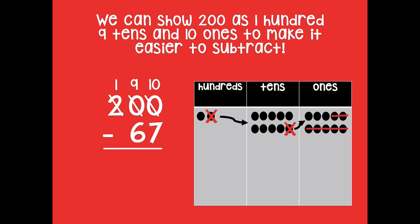So now I could do 10 minus 7, which is 3. Move to my tens place, 9 minus 6, which is 3. And the hundreds place, 1 minus nothing is 1. So 200 minus 67 equals 133. All right, so hopefully you guys got that one.